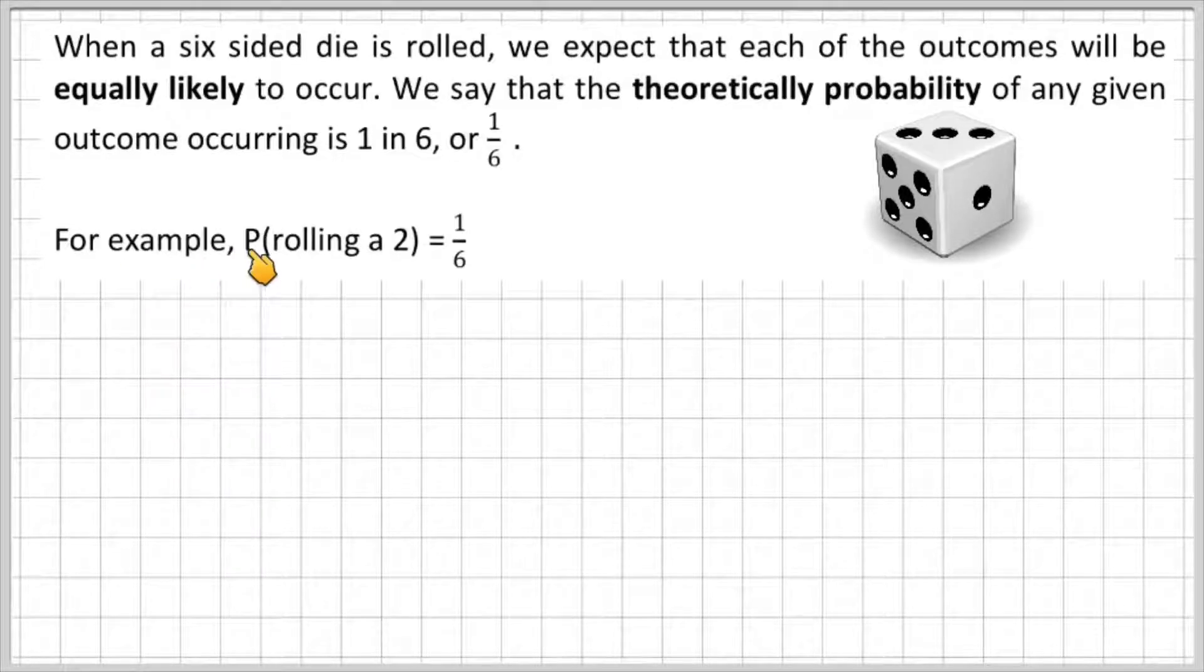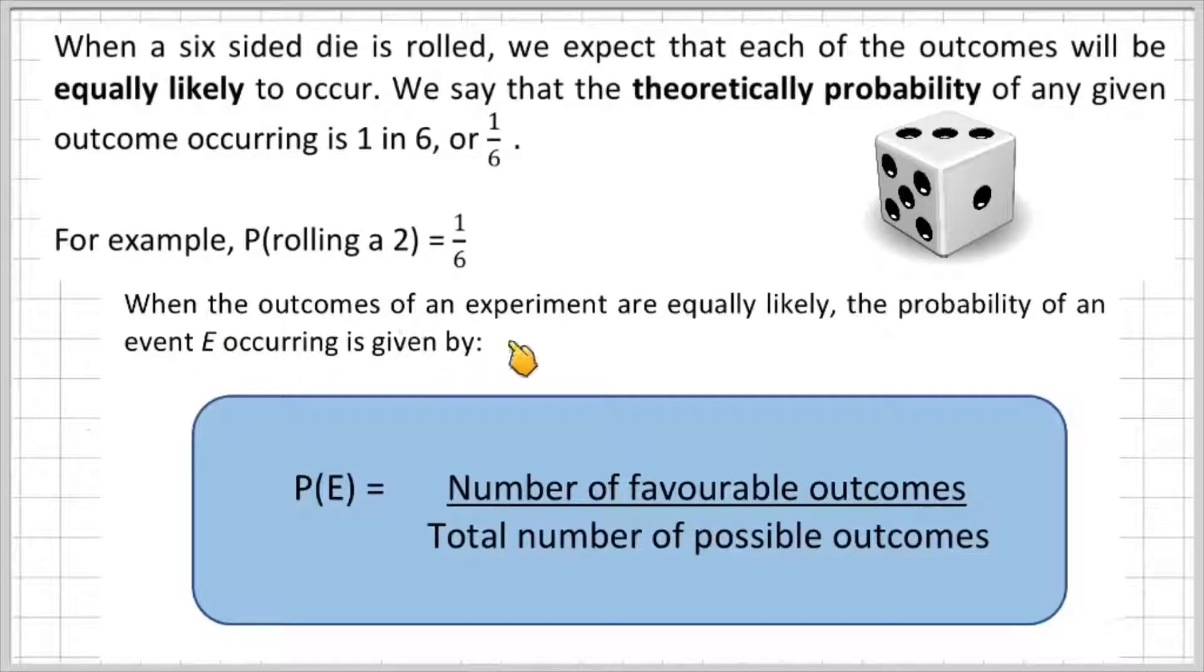For example, the probability of rolling a 2 is 1 out of 6 because there's 1 two out of 6 possible outcomes. So when the outcomes of an experiment are equally likely,